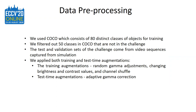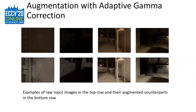For training augmentations, we applied random gamma adjustments, changing brightness and contrast values, and channel shuffle. For test time augmentations, we applied adaptive gamma correction, which heuristically amends images that are either too dark or too bright.